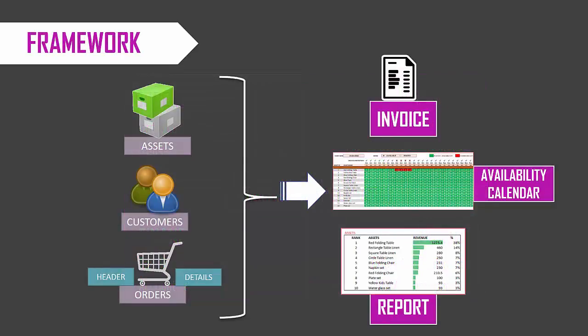The basic framework of the template is that we enter a list of assets or products in our business. Then we enter a list of customers that we serve, and then we enter orders in two steps. One is to enter order header information such as the date of order, customer name, etc. We also enter the order line details — the specific asset being rented, how many units are being rented, and what is the price of each rental.